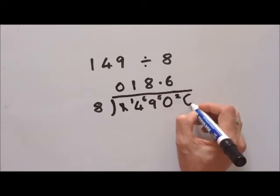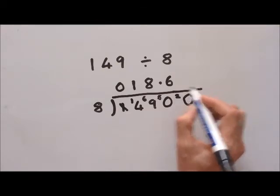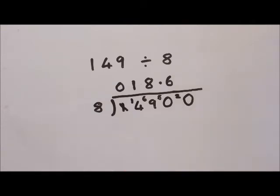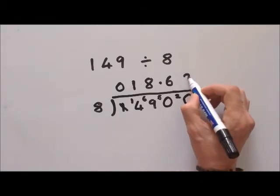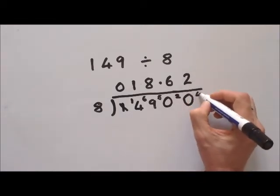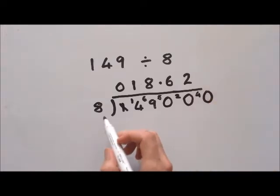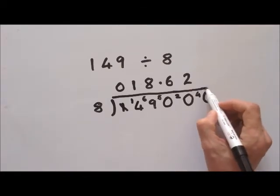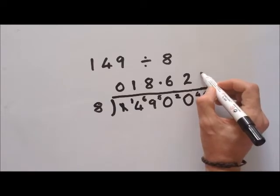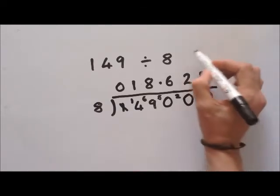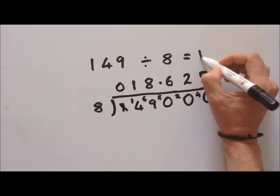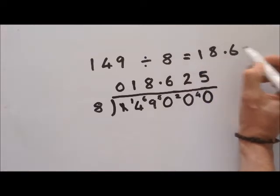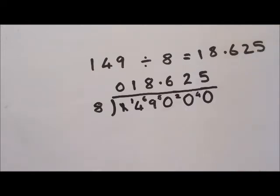We extend our bus stop and put a two here with another zero, making twenty. How many eights can we get out of twenty? Two times eight is sixteen, so that's two with a remainder of four. Put another zero — how many eights in forty? Five times eight is forty, so five exactly. One hundred and forty-nine divided by eight is 18.625.